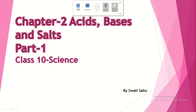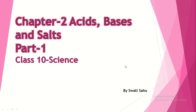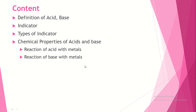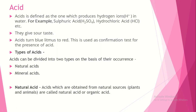Hello students, today we are going to start a new chapter: Acids, Bases and Salts. In this video we are going to cover the basics of this topic — what are acids, bases and salts, the different types of indicators used to identify whether a given liquid is an acid or base, and some chemical properties of acids and bases, like how acids react with metals and how bases react with metals.